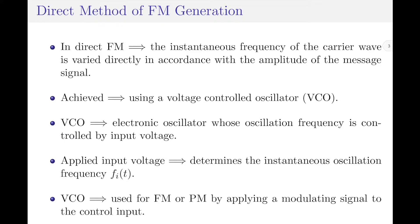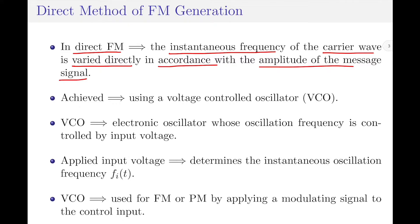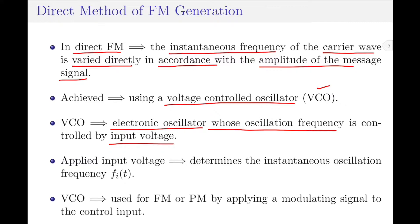As previously said, in direct FM systems, the instantaneous frequency of the carrier wave is directly varied in accordance with the amplitude of the message signal. Please note the frequency of the carrier is varied in accordance with the amplitude of the message signal. This can be achieved by using a voltage controlled oscillator, which is usually denoted by VCO. A VCO is an electronic oscillator whose oscillation frequency is controlled by the input voltage.